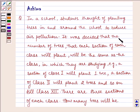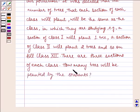It was decided that the number of trees that each section of each class will plant will be the same as the class in which they are studying. Example, a section of class 1 will plant one tree, a section of class 2 will plant two trees and so on till class 12th. There are three sections of each class. How many trees will be planted by the students?